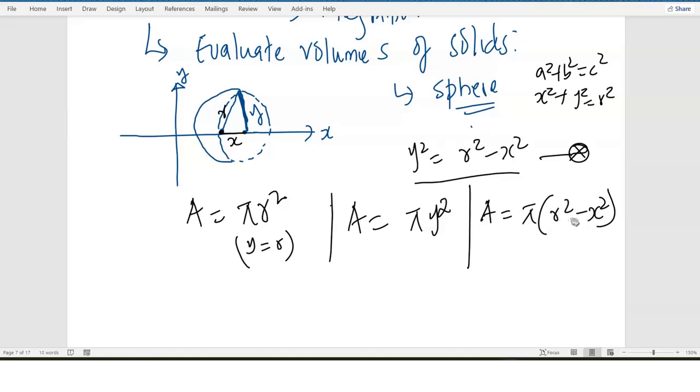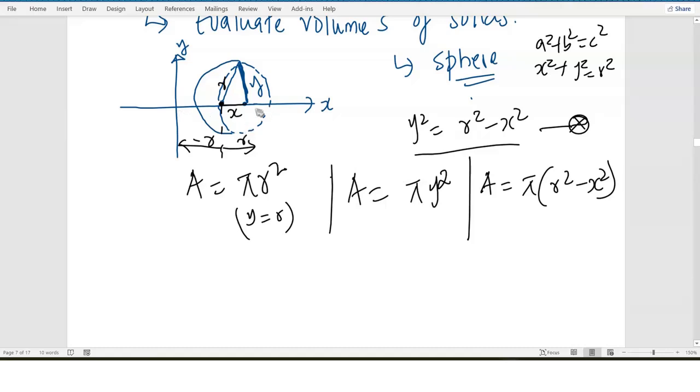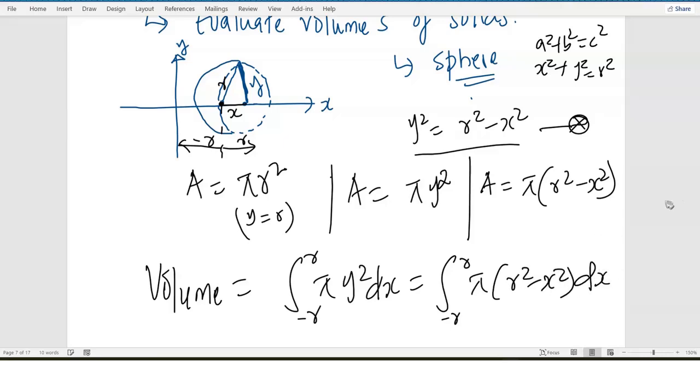So, I want to integrate that area along the x-axis. That's why I'm expressing everything in terms of x. Because, remember, I have r from the center to the end, and from the center going backwards, I have negative r. So, I'm going to integrate this area along the x-axis between the limits negative r to r. So, my volume of this solid will equal integrating from negative r to r of pi y-squared with respect to x. And this is equal to integrating from negative r to r of pi into r-squared minus x-squared with respect to x.